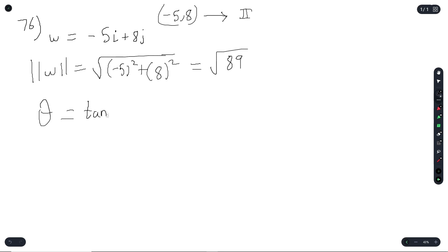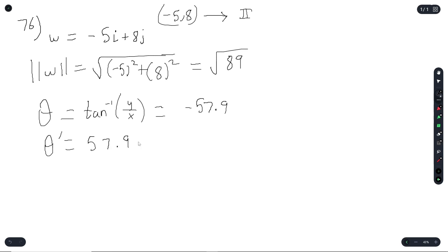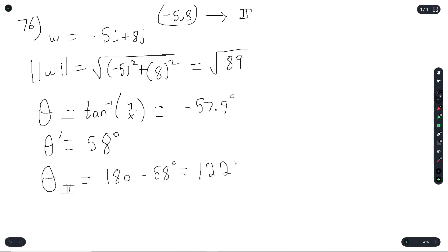To find theta, first determine the quadrant. (Negative 5, 8) is in quadrant 2. Then use tan inverse of (y over x): tan inverse of (8 over negative 5) gives negative 57.9 degrees. The reference angle theta prime is 57.9, approximately 58 degrees. Since we're in quadrant 2, theta equals 180 minus 58, which equals 122 degrees.